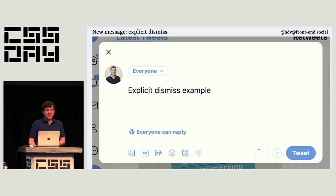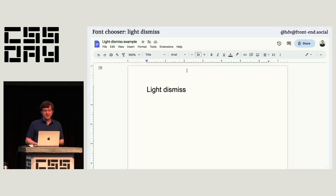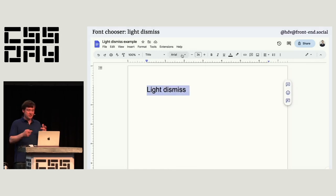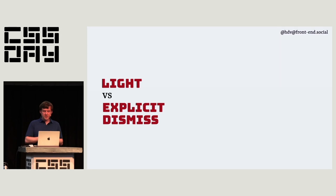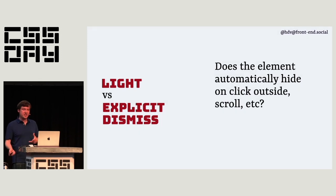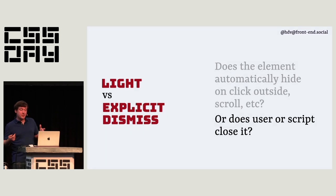The second difference is how they're dismissed. Some dialogs require explicit dismiss — there's a button that needs to be clicked to leave the dialog. In other cases there's light dismiss, which is what happens when you choose a font in Google Docs: clicking outside makes it disappear. Light dismiss basically means the element automatically hides when you click outside, or via some other heuristic like scrolling. Explicit dismiss is when there's a button, or a script, that closes it.